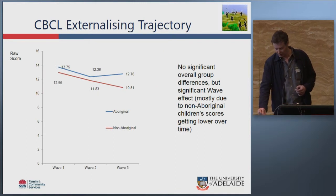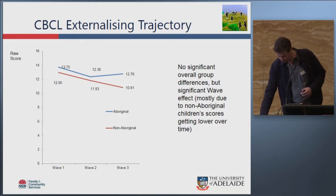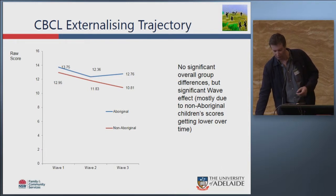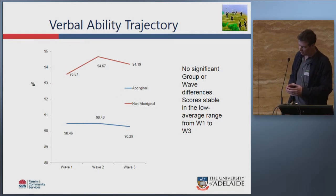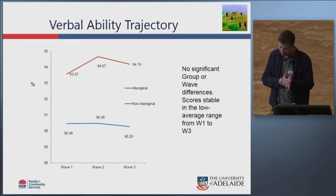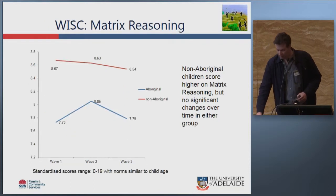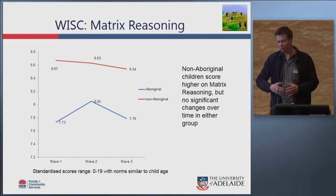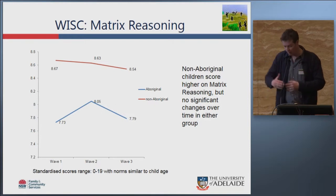Non-Aboriginal children showed slightly more improvement than Aboriginal children on externalizing scores, though these are raw scores with a trend towards improvement. For verbal ability, there was no significant difference between Aboriginal and non-Aboriginal children, with scores generally stable over time. On the WISC matrix reasoning measure, scores didn't change over time — Aboriginal children scored slightly lower than non-Aboriginal children, but there was no evidence that the gap was widening over time.